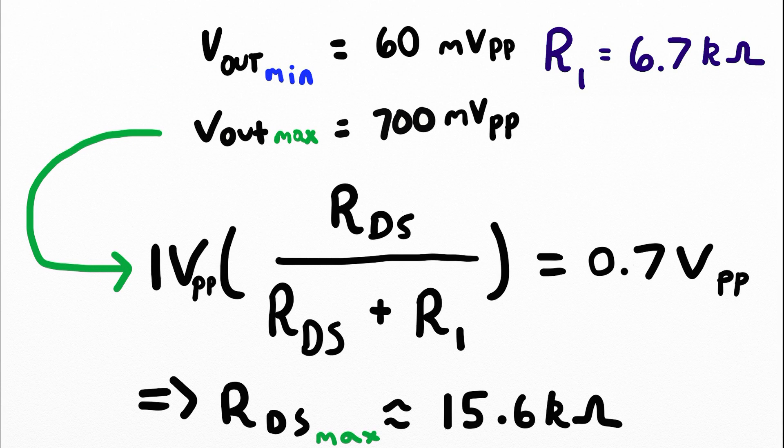Following the exact same steps and procedures, we get the resistance of the drain to source maximum being 15.6 kilo ohms. Because we plugged in the minimum and maximum output voltages, we now know the full range of the resistance of the drain to source given the circuit configuration. We can dial in specific resistance values given appropriate gate to source voltages that are within the linear region.